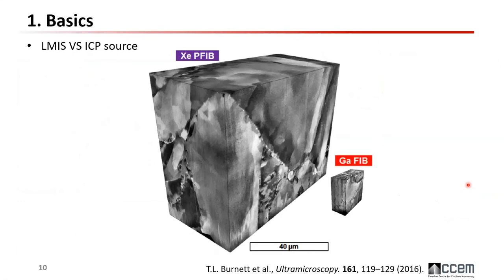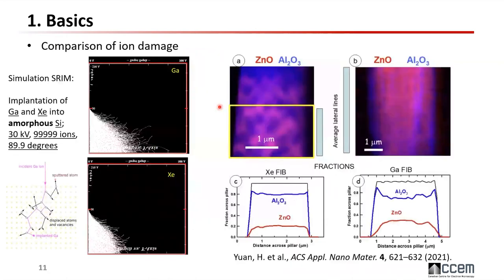One thing that comes to mind is the milled volume: the xenon source is much larger and allows access to big volumes, giving you good statistics for your sample. Another advantage of xenon is less ion damage. Simulation shows the impact between the ion beam and the sample — even if the simulation is for amorphous silicon, it gives you an idea of how deep the damage goes with each source type. The xenon damage is shallower.